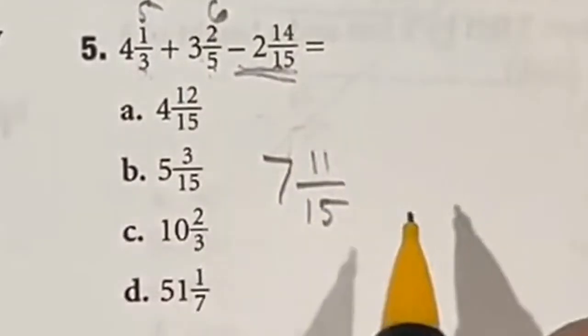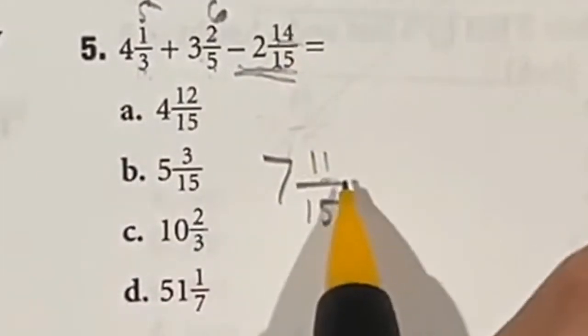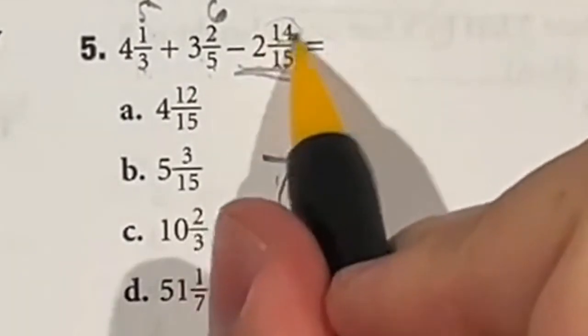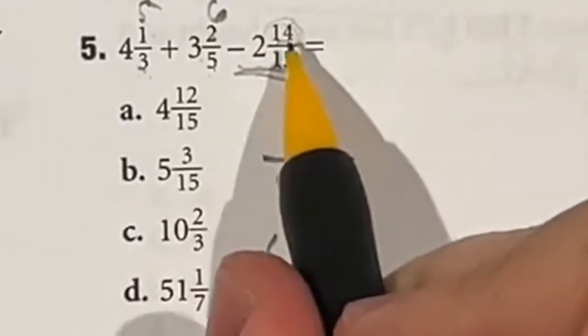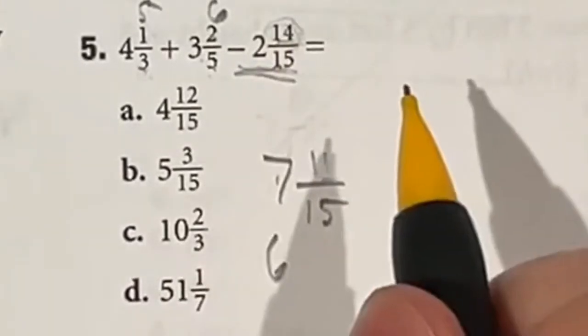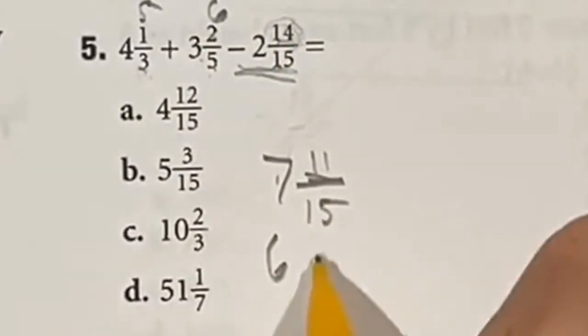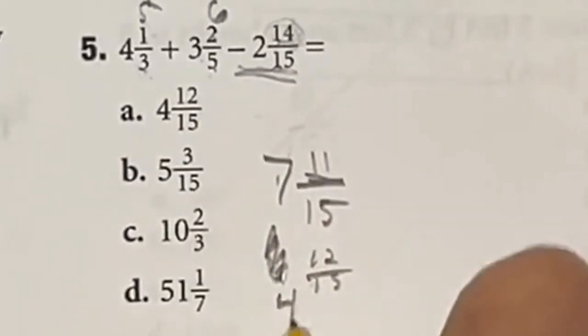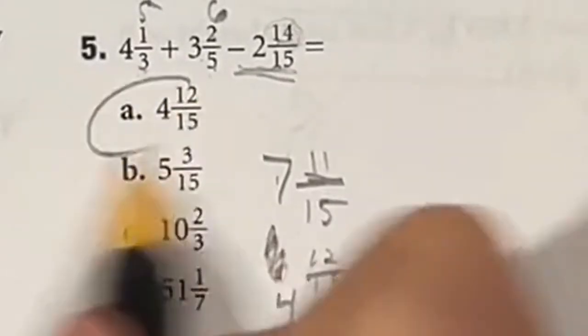Now we have to subtract this guy. But since this 14 is bigger than the 11, I do have to carry one from here. So now I'm going to have a 6 out front, and I'm going to have another 15 to work with for subtracting. Well, 15 minus that 14 will give me 1 left over plus the 11 we already had. So that's 12 over 15 total left over. And 6 minus the 2 is going to give us 4. So 4 and 12 over 15, which is A.